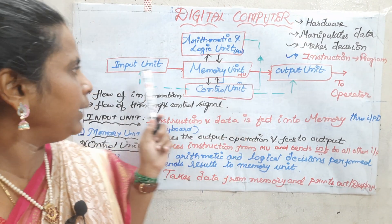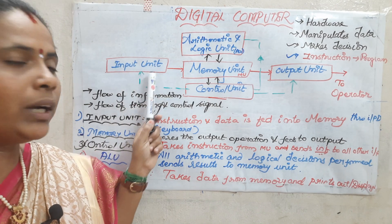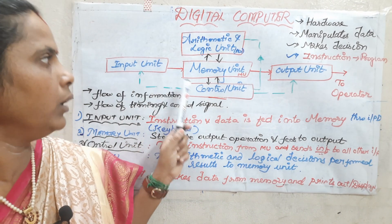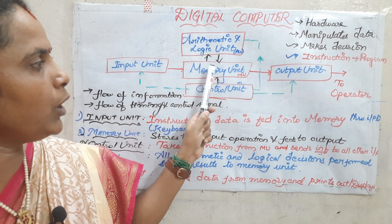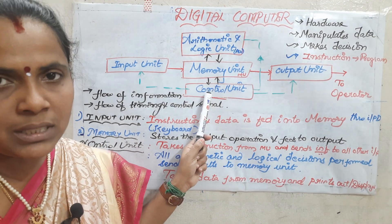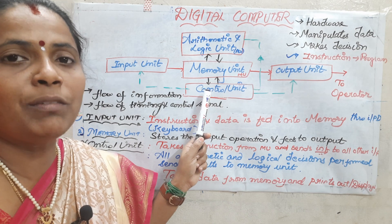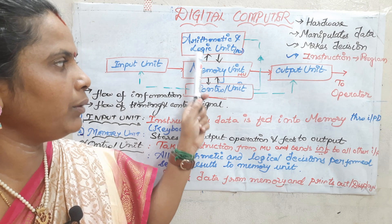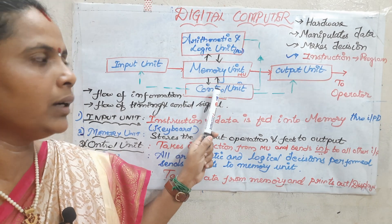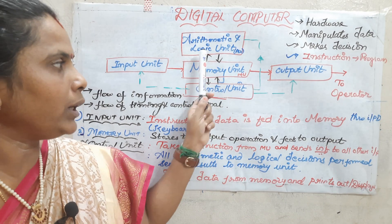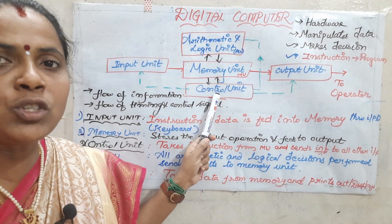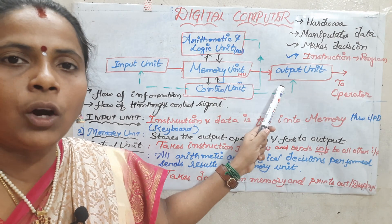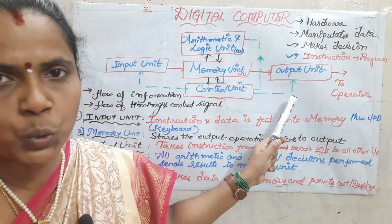They are nothing but: input unit, which is nothing but a keyboard by which you give instructions to the computer. Inside your PC, you have three units responsible for carrying out various processes — the arithmetic and logic unit, a memory unit, and a control unit. Whatever calculations or processes you want to execute, that is executed and shown via the output unit, which is usually your monitor.